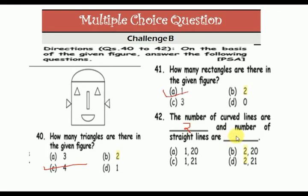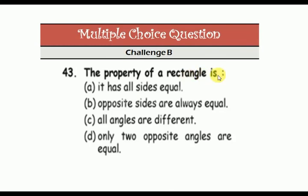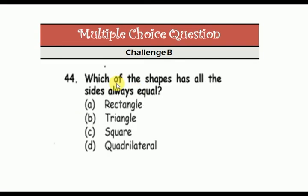The number of curve lines is two. The property of a rectangle: opposite sides are always equal and all angles are equal. Which shape has all sides always equal? The answer is square.